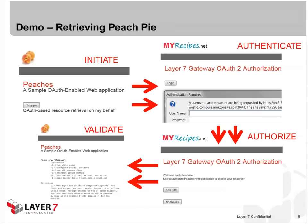Graphically, we can see that Peaches initiates the process — the workflow. Myrecipes.net authenticates the user based on your credentials, authorizes the user based on your decision, and then passes it back to Peaches, which retrieves the resource, validates your OAuth token, and displays your peach pie recipe.